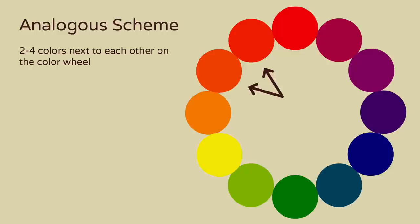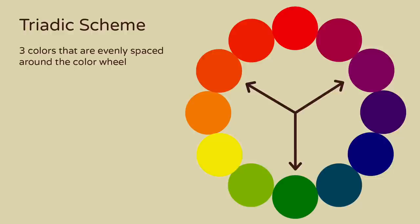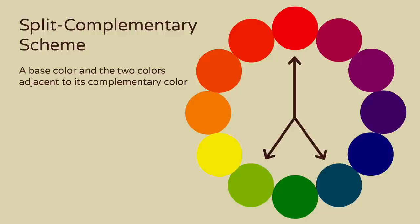An analogous color scheme is made up of two to four colors sitting next to each other on the color wheel. These are just a few examples of analogous color schemes. A triadic color scheme is made up of three colors that are evenly spaced around the color wheel. Again, these are just a few examples of triadic color schemes.